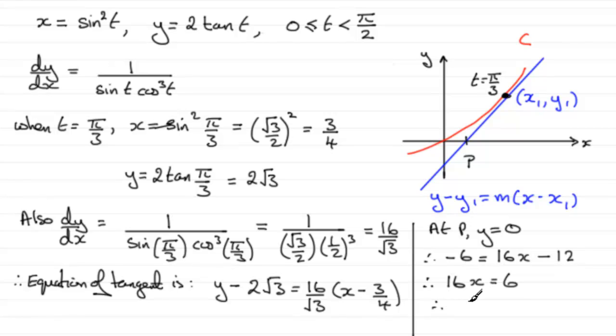So dividing by 16 gives us that x equals 6/16, which reduces down to 3/8 if we divide top and bottom by 2. So there's our x-coordinate then at the point P, that's going to be 3/8.